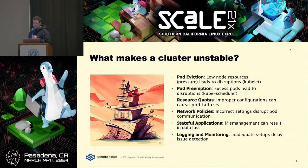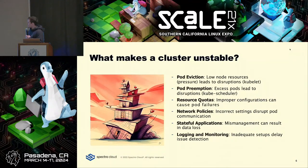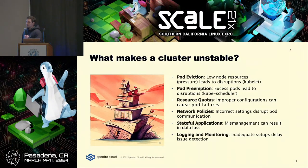So what else makes a cluster unstable? When you start thinking about stability, you have to understand pod eviction and pod preemption, and who's doing that when. When node resources get low — aka node pressure — the kubelet will start evicting pods, taking into consideration things like priority, quality of service, and many other things.